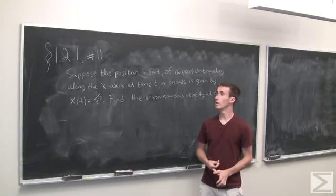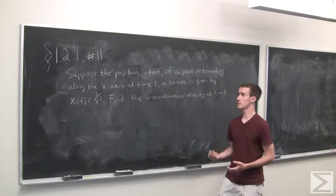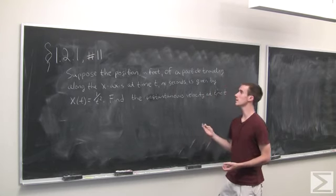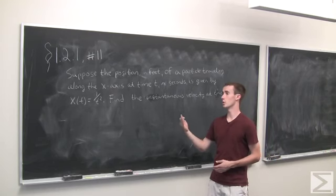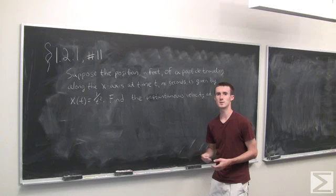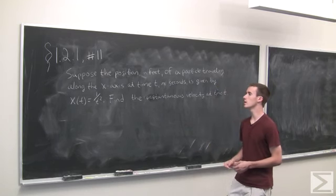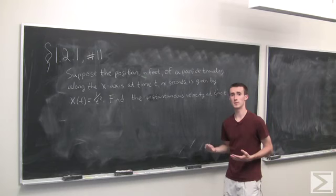For problem number 11 in section 1.2.1, we're given a physics problem where we have a particle traveling along the x-axis whose position is given by the function 1 over t squared, where t is time measured in seconds and position measured in feet. We want to find the instantaneous velocity at any given time t.